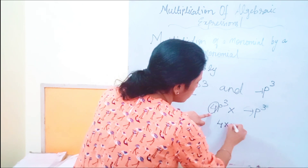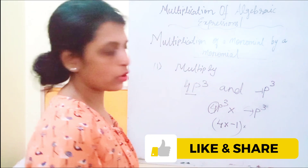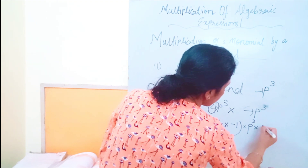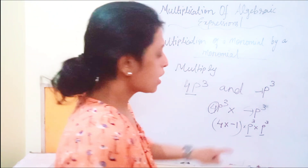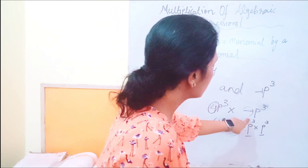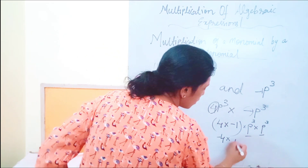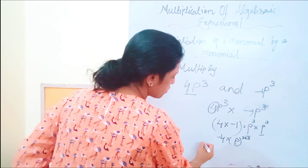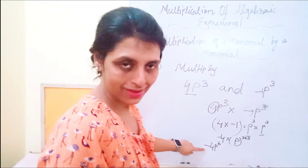4 into minus 1 will be multiplied for the numerical coefficients. For the variables, we are going to use the product rule: p to the power 3 multiplied by p to the power 3. The bases are the same and the operation is multiplication, so the powers will get added. 4 into minus 1 is minus 4, and 3 plus 3 equals 6, giving us minus 4p to the power 6.